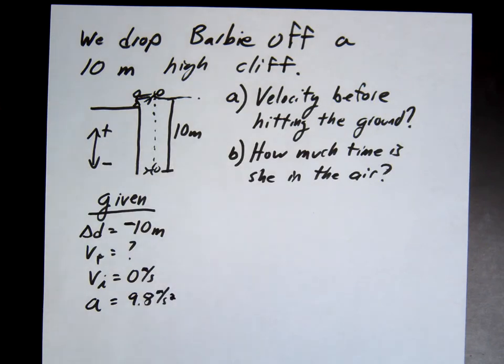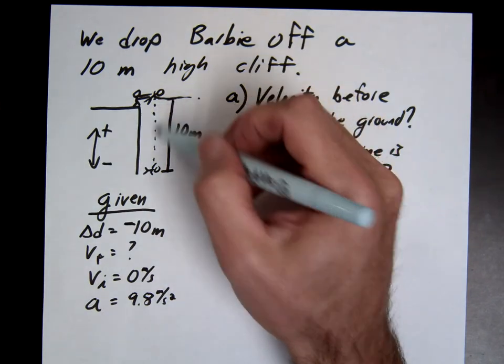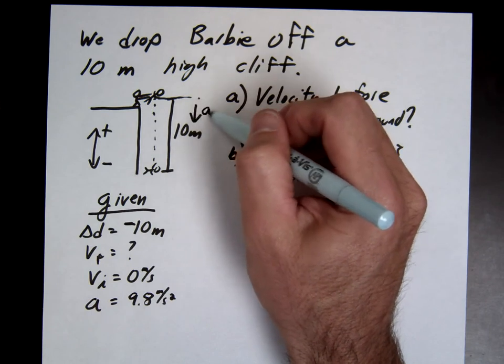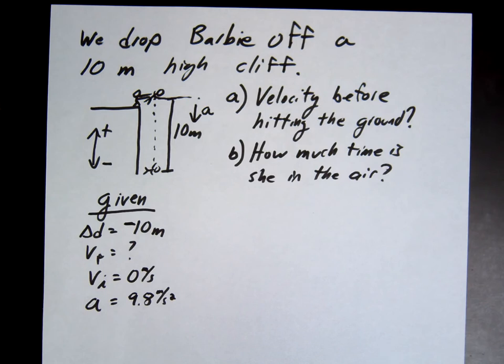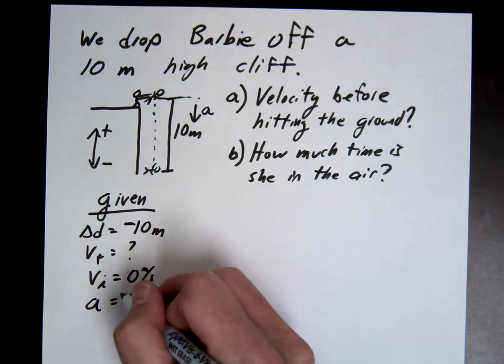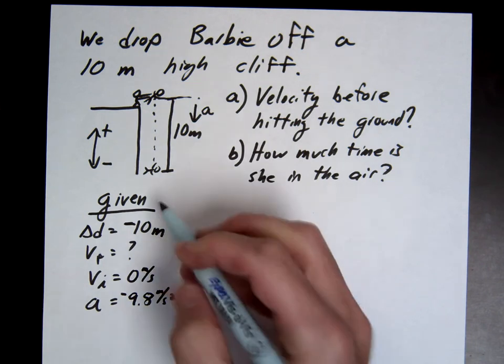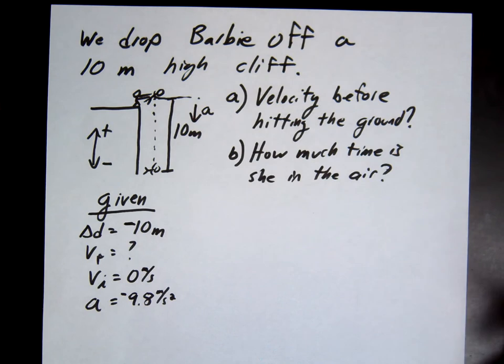Now remember, acceleration is also a vector, so we have to consider direction. So 9.8, should this be positive or negative? She's accelerating what direction? Down. Down. So since she's accelerating downwards, we are going to make this negative 9.8, showing that she's accelerating down. Okay? All right, there we go. Where's our three digits? One, two, three.